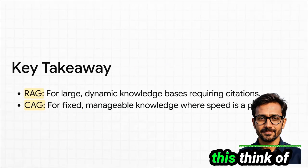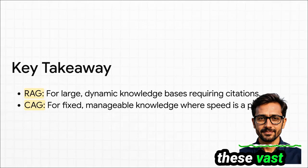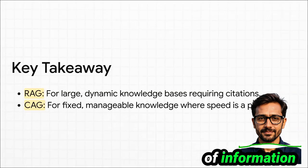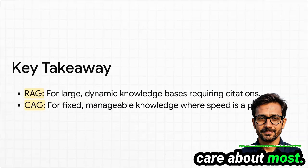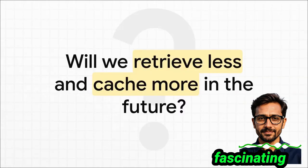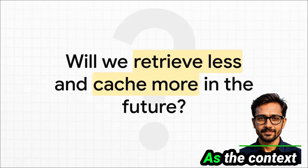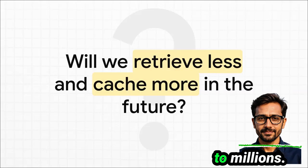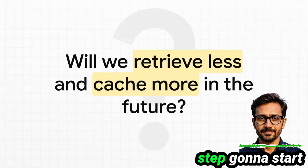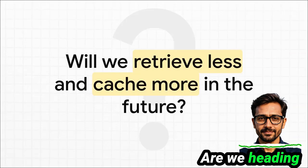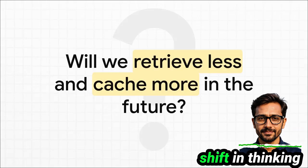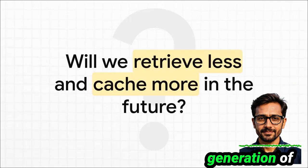It really all boils down to this: think of RAG as your tool for navigating vast, ever-changing oceans of data where you need to pinpoint your sources. CAG is perfect for well-defined, static lakes of information where speed and simplicity are what you care about most. As context windows keep getting bigger — from thousands of tokens to millions — is the need for a separate retrieval step going to fade away? Are we heading towards a future where we retrieve less and simply cache more? It's a fundamental shift in thinking that could totally reshape how we build the next generation of AI applications.